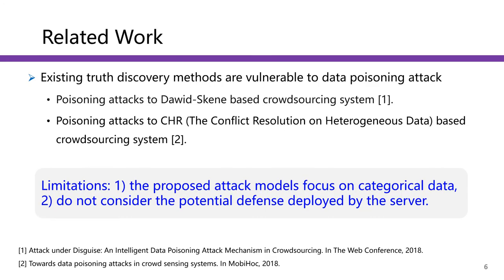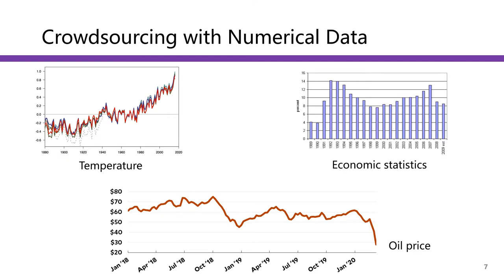Most methods in the truth discovery family are based on the assumption that all the workers are benign. Recent studies have found that existing truth discovery methods are vulnerable to data poisoning attacks. However, all these proposed attack models focus on crowdsourcing applications with category labels, and they do not consider the potential defense deployed by the server side. In practice, numerical data is not only commonly used, but also of high value. For example, temperature values, oil price, and economic statistics are all numerical data.